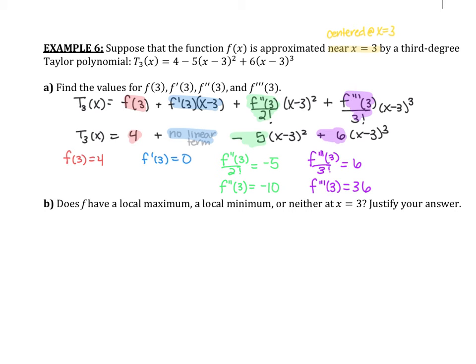Now, the question is asked, does f have a local max, a local min, or neither at x equals three? Well, let's think about this. What we know is that f prime of three is zero. What does that mean? What does it mean if our first derivative is zero? Well, it means that this is a critical value. So it is possible that I will have a max or a min.